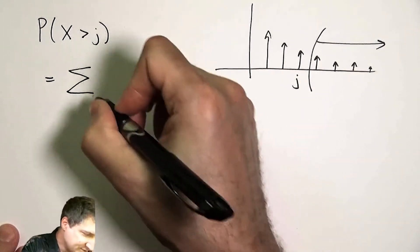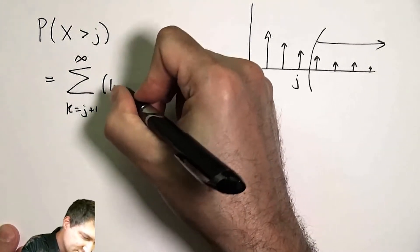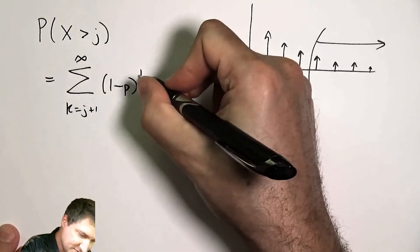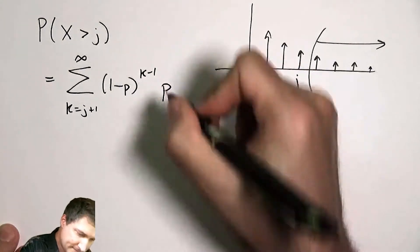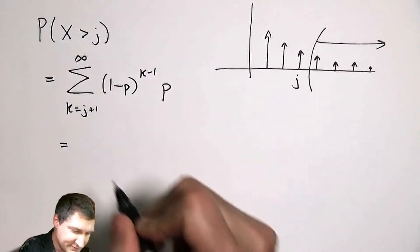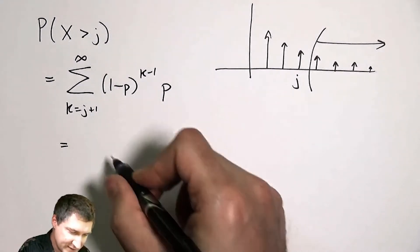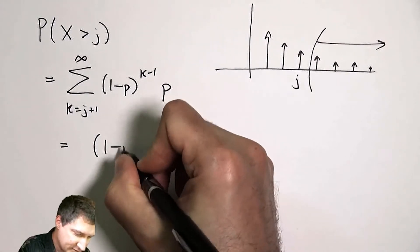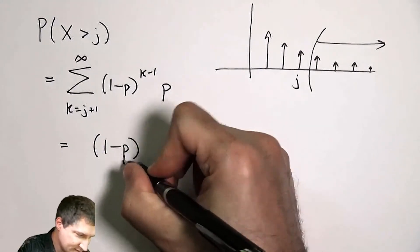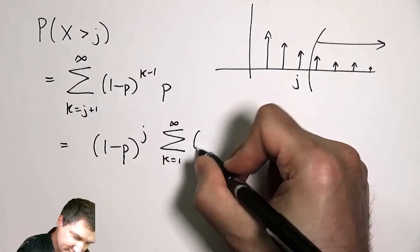And I can just actually write down the sum of those arrows explicitly. This is the PMF. And let's just rewrite things. So instead of summing from j plus one to infinity, I'm summing from one to infinity. That means I can take a factor of (1-p)^j out. And what I'm left with is summing from one to infinity.